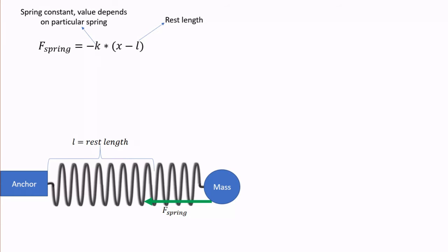Next, we have this quantity in parentheses, x minus rest length. The x refers to the actual position of the mass at the tip of the spring. So we take that position and we subtract it by the rest length. This just tells us how much we have stretched or compressed the spring. The more we stretch it or compress it, the stronger the force will be.